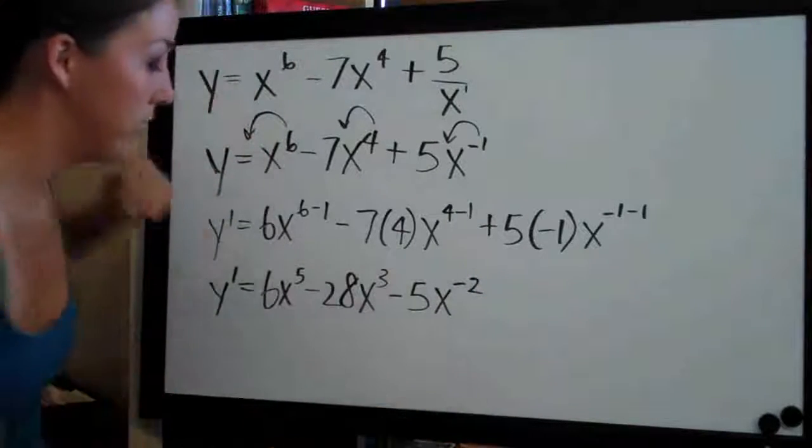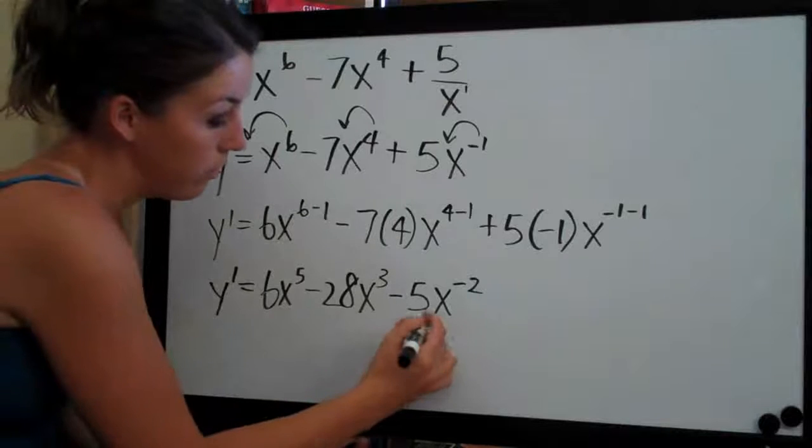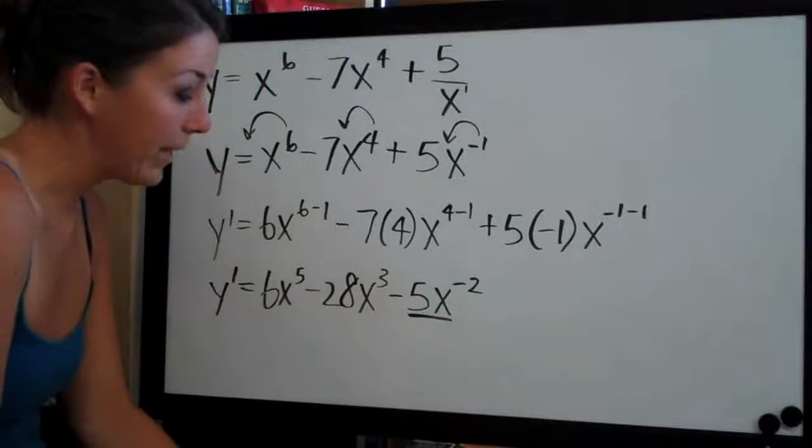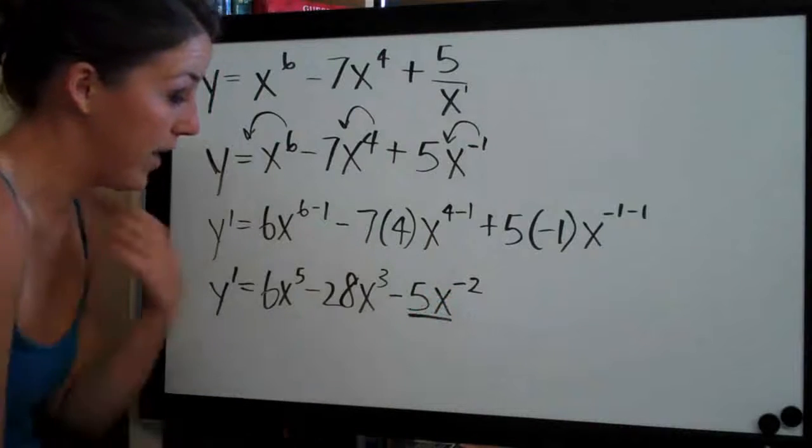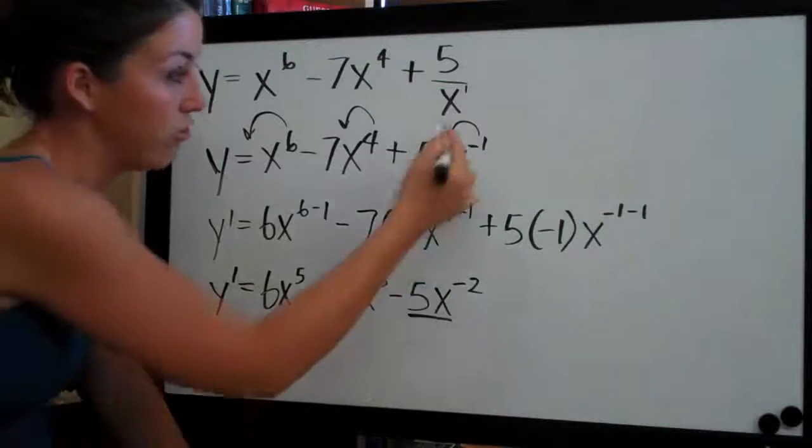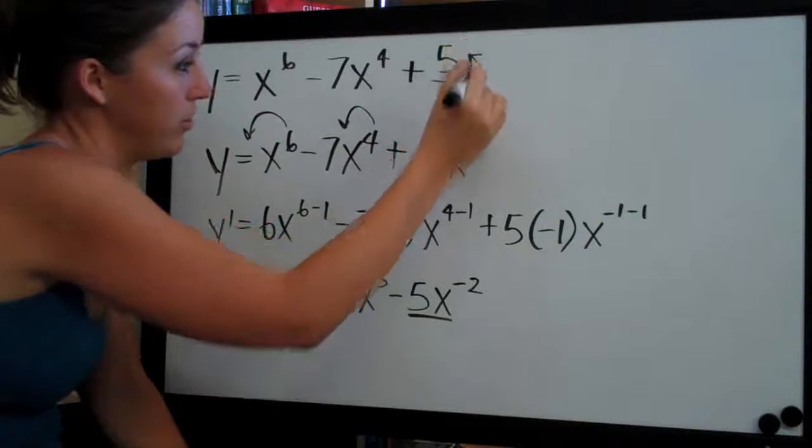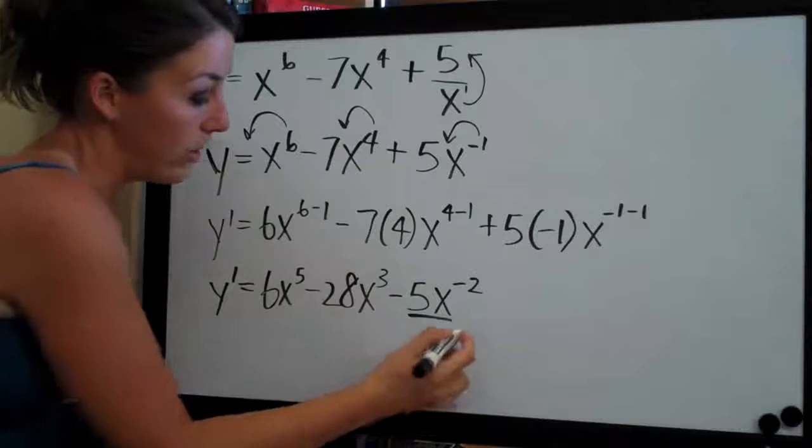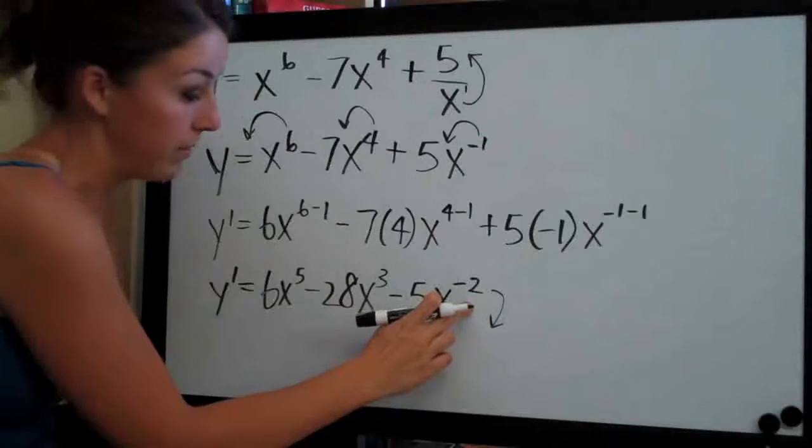And we could leave our answer here but it would be much cleaner if we convert this term back into a fraction so that we don't have this negative exponent here which is kind of nasty. And the way that we do that is just like we moved the x into the numerator by changing the sign on the exponent, we can move it back into the denominator by again flipping the sign on the exponent.